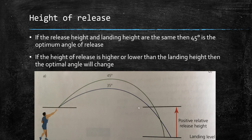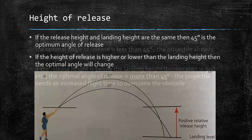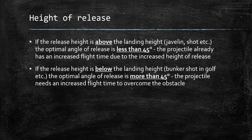If the javelin was landing at the same height as it was released, it would be 45 degrees — you can see that gives the greater distance — but at 35 degrees it will actually travel further given the height difference. In javelin, the optimal angle is less than 45 degrees because the projectile already has increased flight time due to the increased height of release. However, if the release height is below the landing height — for example a bunker shot in golf, where the golf ball is below the grass it would be landing on — then the optimal angle is more than 45 degrees, probably around 60 degrees, to give the projectile increased flight time to overcome the obstacle.